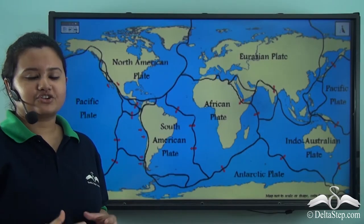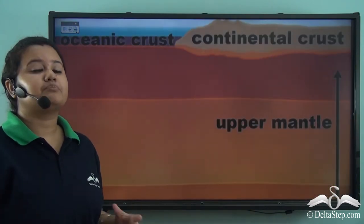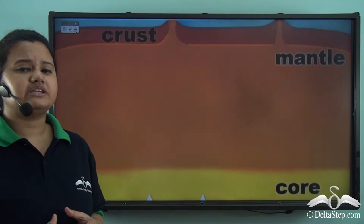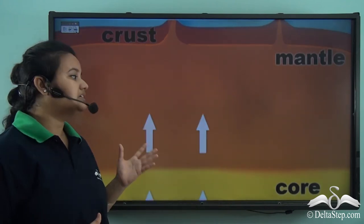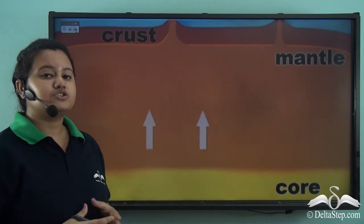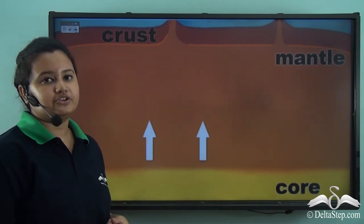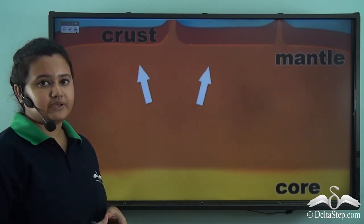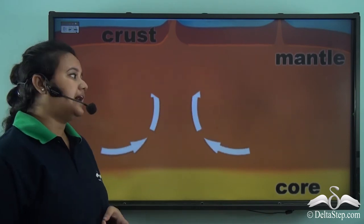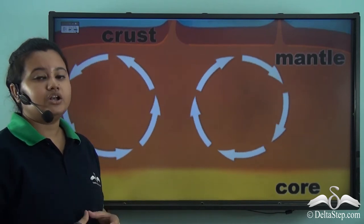The earth's crust is divided into several tectonic plates, and these tectonic plates are not static but float on a molten material called magma present in the mantle. But why do these tectonic plates move? This is because the earth's interior is too hot and it heats up the materials lying above it. The heated materials rise up, being lighter, while the cooler materials sink down to occupy the empty space. These materials are eventually heated up again by the earth's core and rise up, continuing in the form of a cycle called convectional currents.